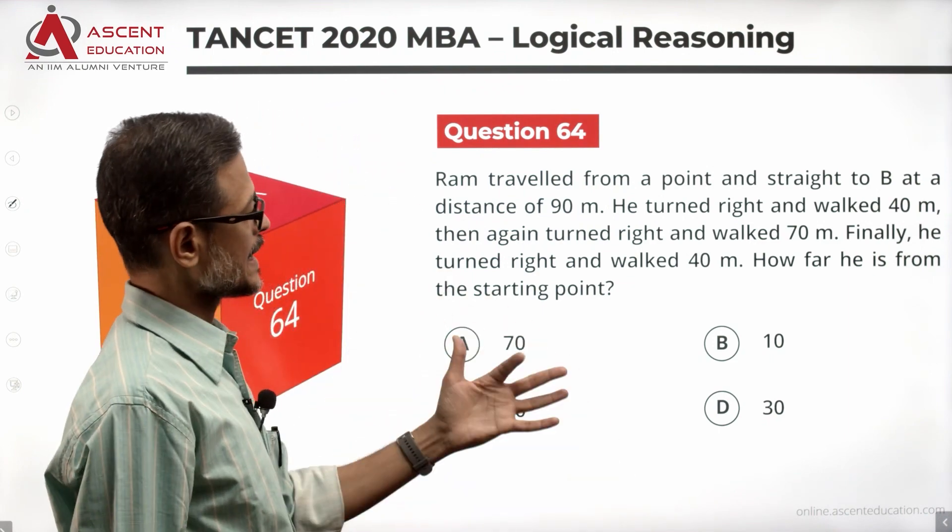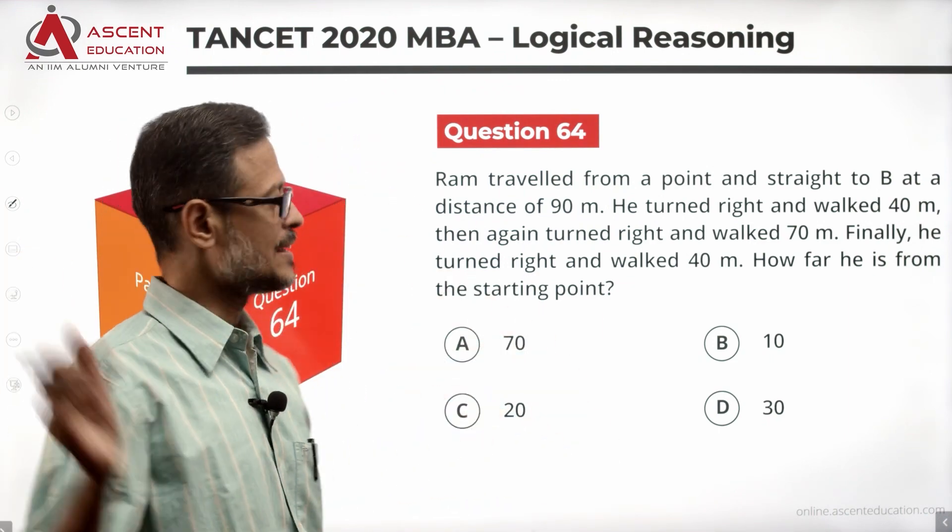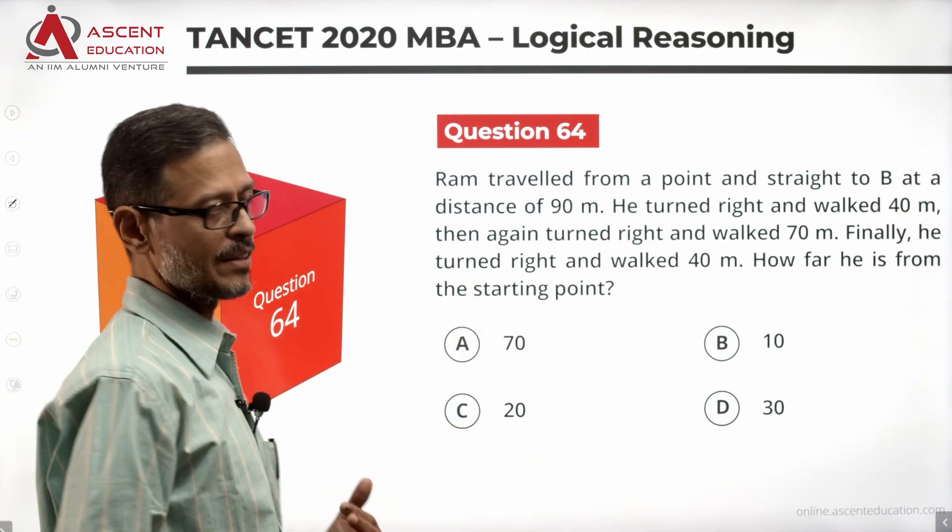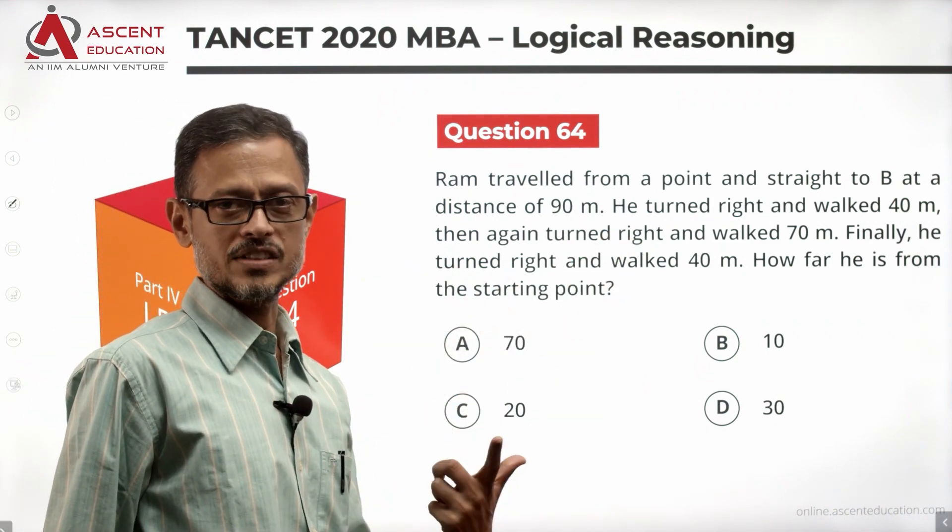Finally, he turned right and walked 40 meters. How far from the starting point is Ram right now after all of this is done?